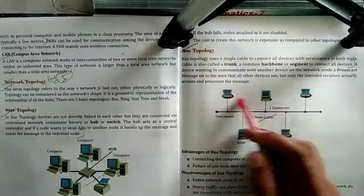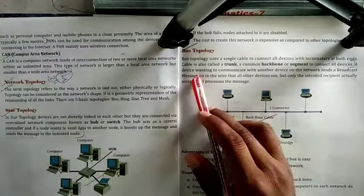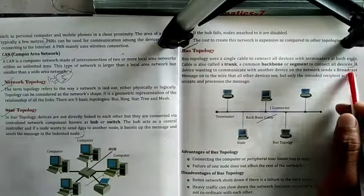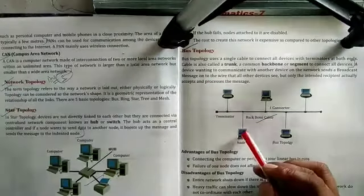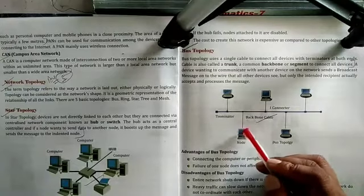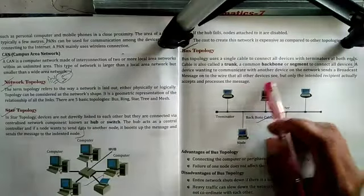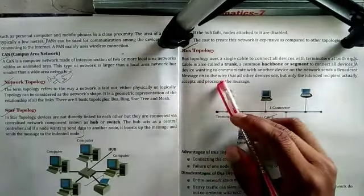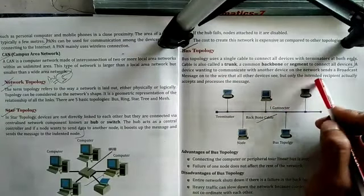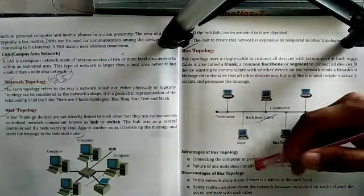All nodes are directly linked to this backbone. A device wanting to communicate with another device on the network sends a broadcast message on the wire. If a device wants to send any information, it broadcasts the message onto the backbone cable. All other devices see the message on the wire, but only the intended recipient actually accepts and processes the message.